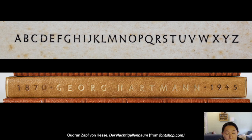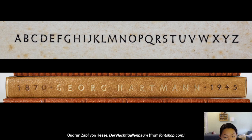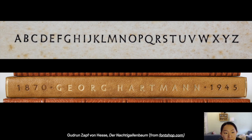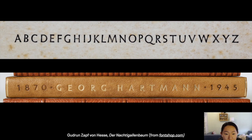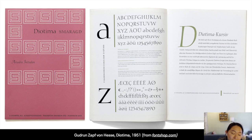Hess Antiqua was only in metal type format for a long time before it was digitized fairly recently. She was very well known for using it in her bookbinding — with gold stamps made with hot metal letter punches. When it was revived for a digital version, there was a lot of documentation about how Hess Antiqua was meant to be pressed into surfaces, accounting for the slight impression when engraved on a leather binding. She also designed Diotima for Stempel later in 1951, and it's just beautiful when set in text.